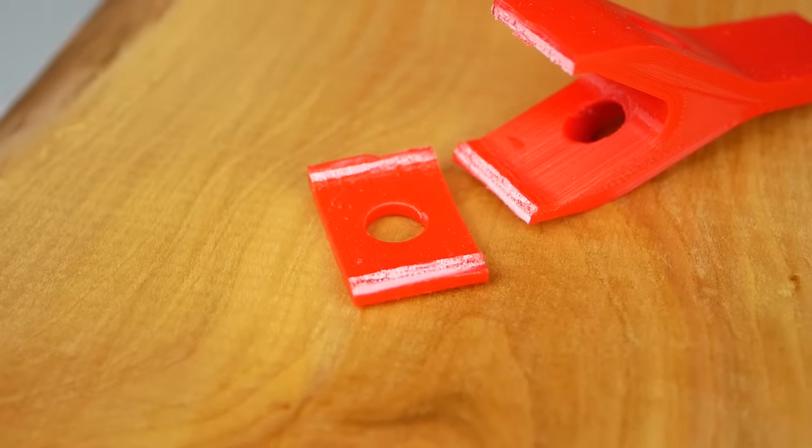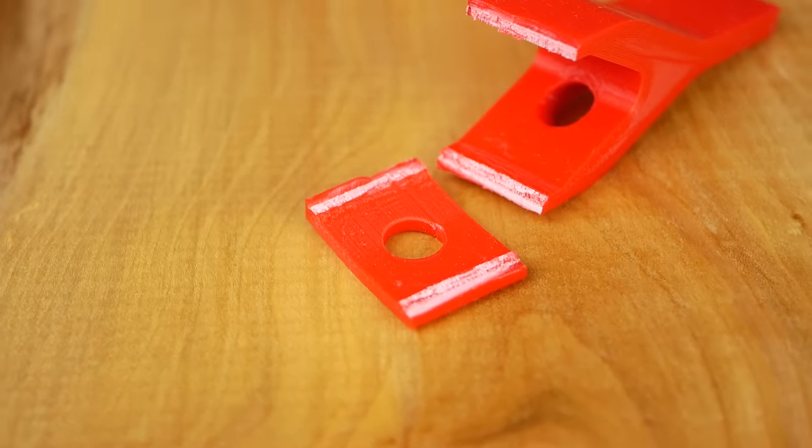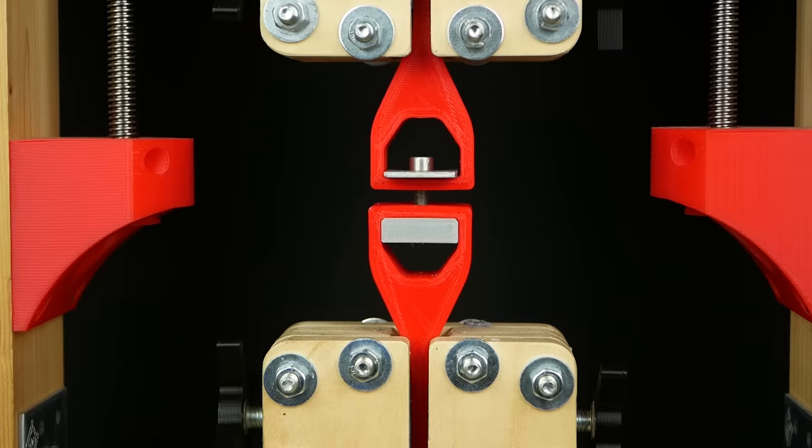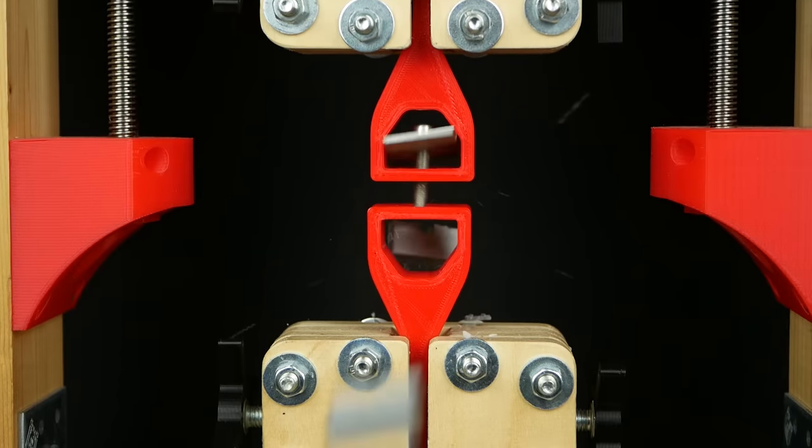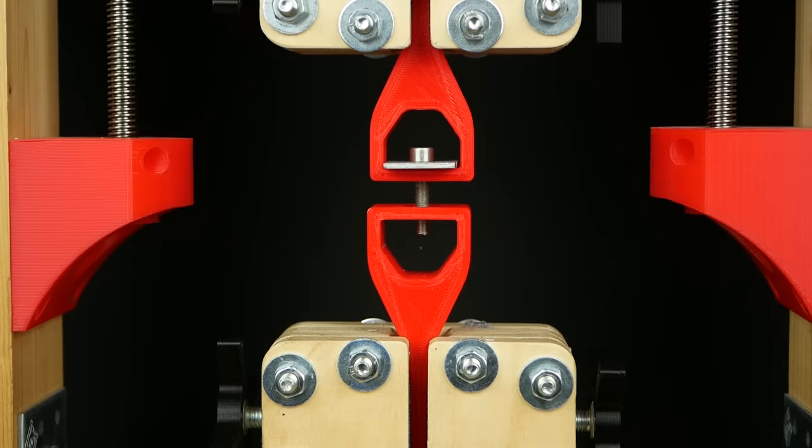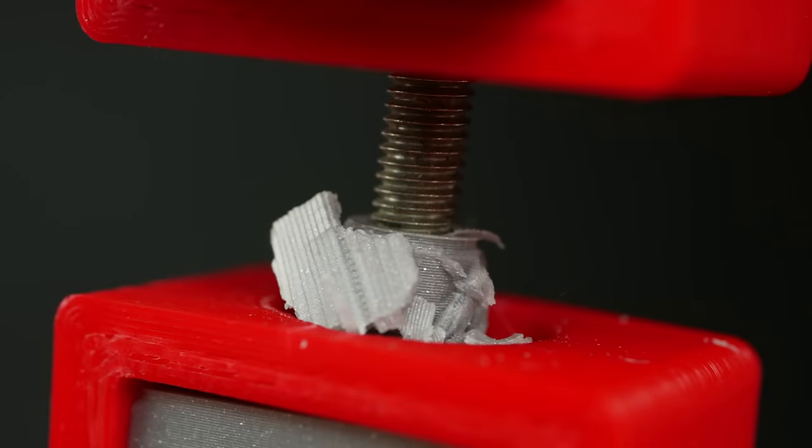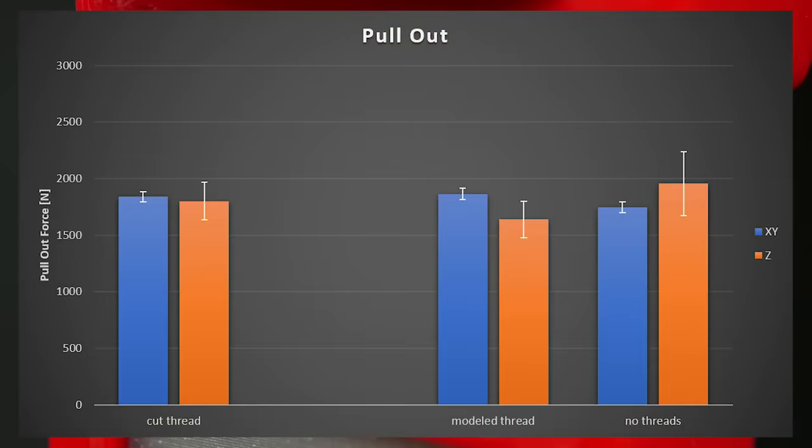In hindsight, I was quite happy that I didn't use any bigger threads since my Universal Test Machine got quite to its limits during the tests. So, the pull-out strength for the cut, modeled and no threads were very similar and the samples failed just shy of 2000N.